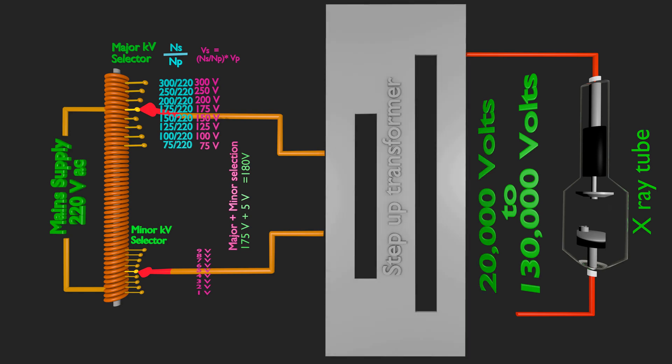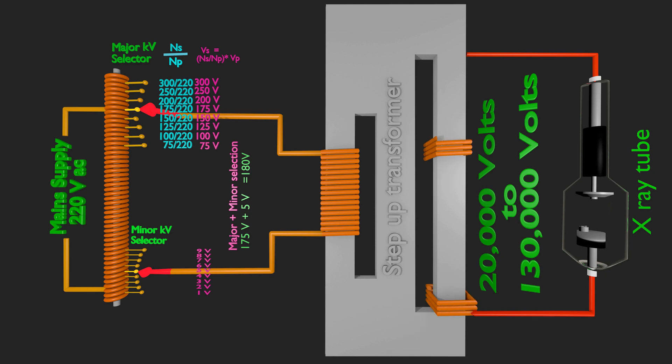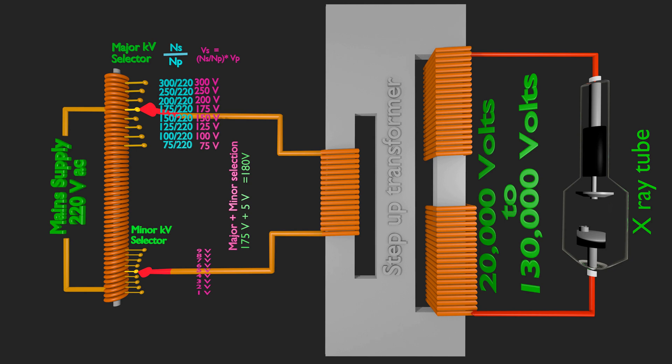Step-up transformer consists of an iron core. Primary coil winding is done on one limb of iron core. Secondary coil winding is done on other limb of iron core. The secondary winding of high-tension transformer is wound in two parts and the center of the winding is earthed to reduce insulation.